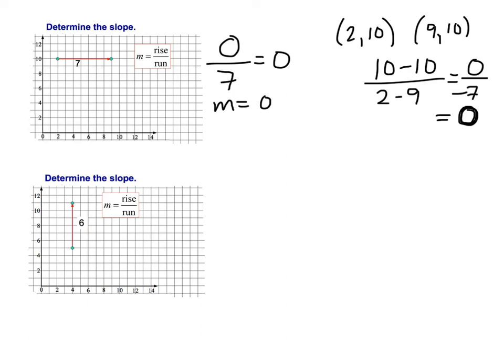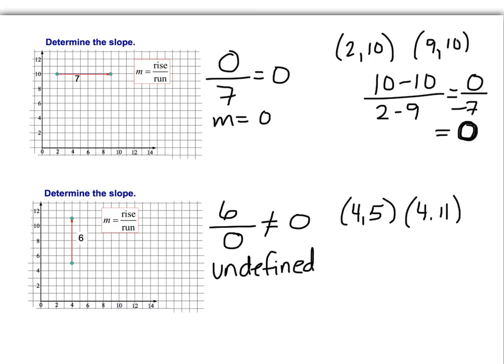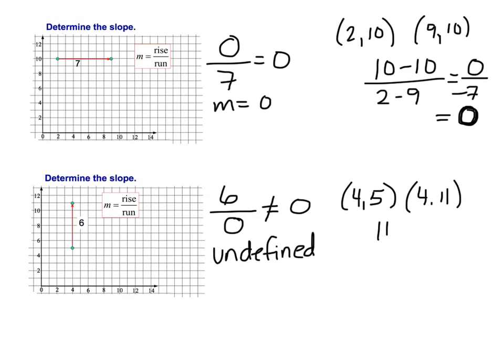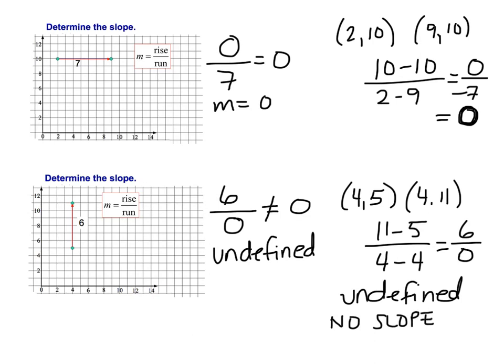How about this one? This time we have a rise of 6. And a run, we don't move to the right or the left over 0. Well, that is not equal to 0. Do not write down a 0 for that. That is what we call undefined. So this line has an undefined slope. That vertical line has an undefined slope. And again, we can use our ordered pairs. So our ordered pairs are (4, 5) and (4, 11). Okay, so y minus y. So 11 minus 5, y minus y over x minus x. And that gives me 6 over 0, which again is undefined. We can also say that this line has no slope at all. So you have a slope of 0 and you have no slope at all.